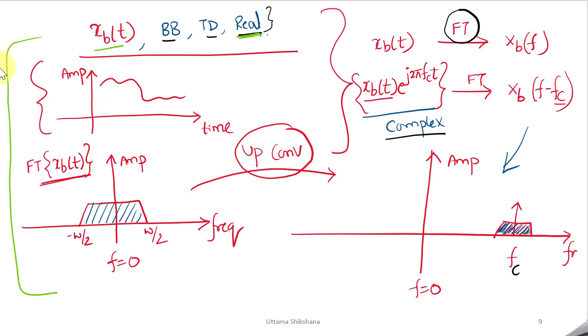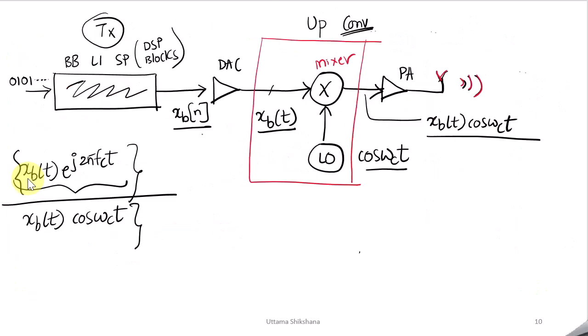To transmit this signal we need a very large antenna, so usually in our transmitter we do up-conversion. For the time-domain baseband signal, to do up-conversion we need to multiply with a complex exponential. We then see that the baseband signal is shifted to the center frequency f_c in the frequency domain.